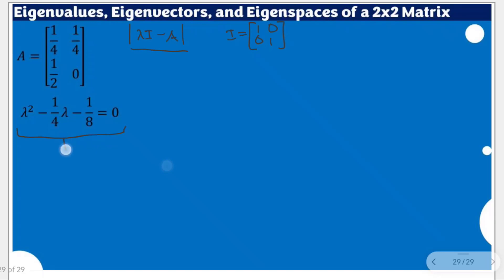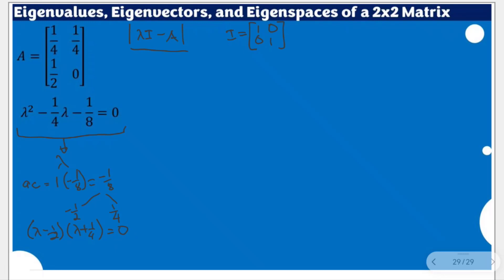We are going to solve for the value of lambda — that's for our eigenvalues. Because we have a quadratic trinomial, we can use the AC method. Multiply A and negative 1/8th to get negative 1/8th. The factors that multiply to negative 1/8th and add to negative 1/4th are negative 1/2 and positive 1/4th. This gives us (lambda minus 1/2)(lambda plus 1/4) = 0.